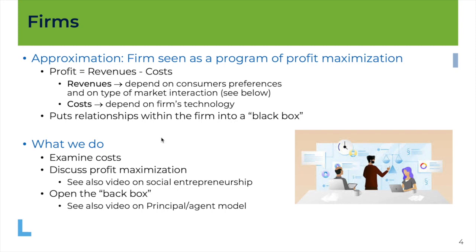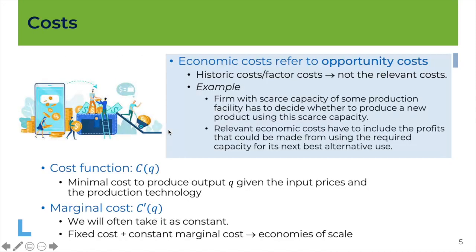For now we take this approximation: firms are seen as a program of profit maximization. Profit is the difference between revenues and costs. The revenues we'll have to discuss later because they depend on consumer preferences, which is related to the determination of demand as discussed in another video. The costs — which is what we want to present here — depend on the firm's technology.